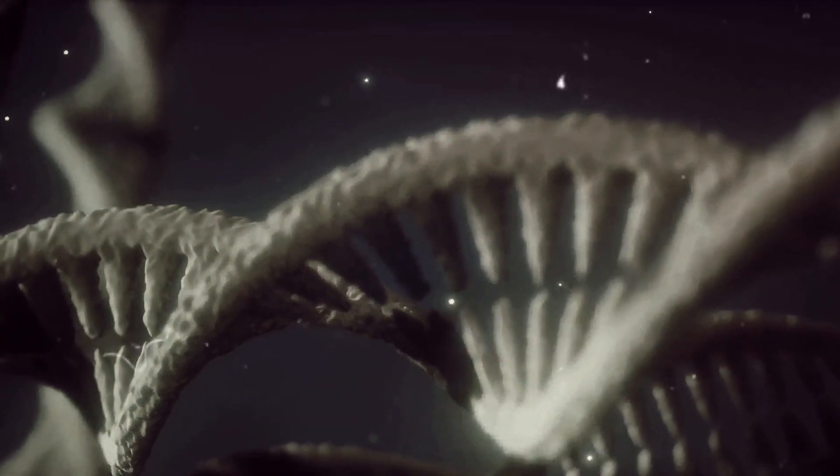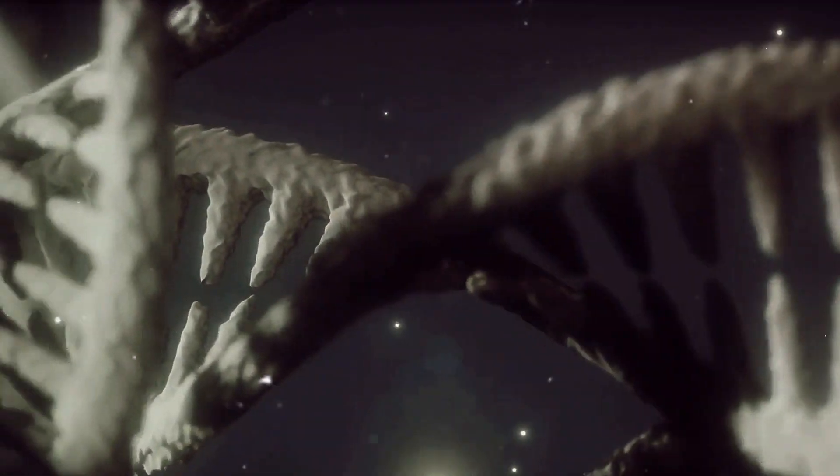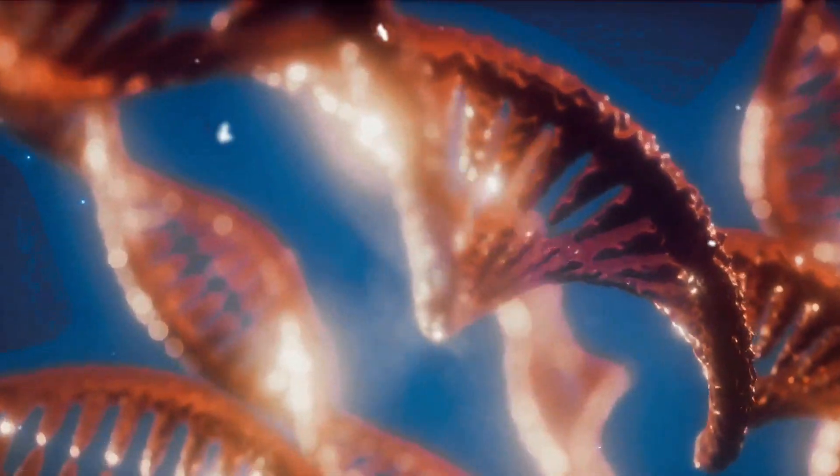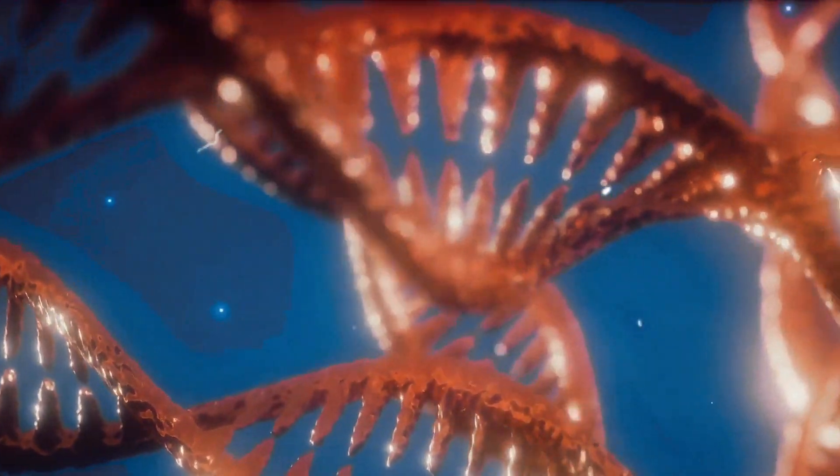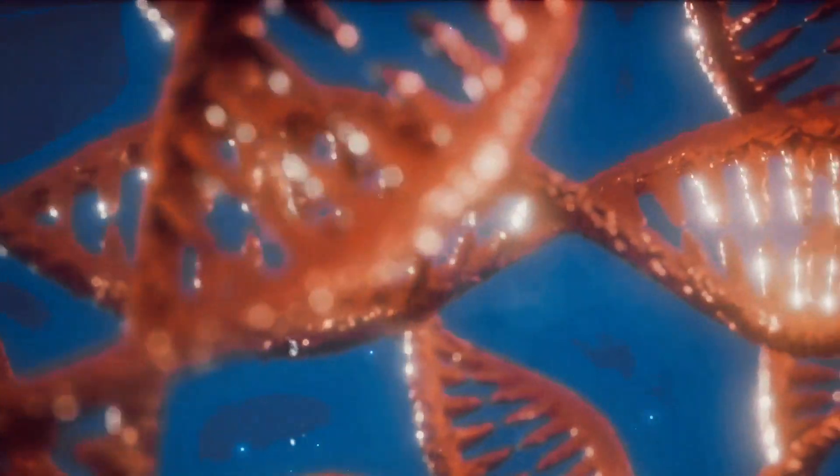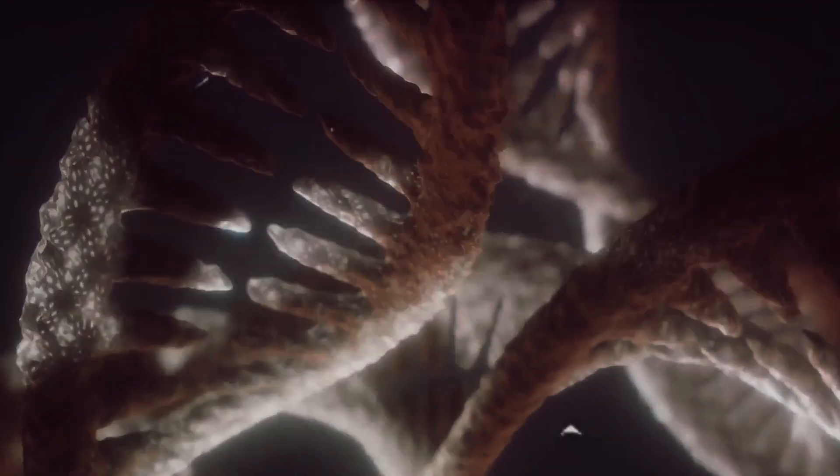Commonly known as A, G, C, and T. The order of these bases is what determines the information available for building and maintaining an organism, similar to how letters of the alphabet form words and sentences. Our DNA resides in structures called chromosomes, found in the nucleus of our cells. Humans typically have 46 chromosomes, 23 from each parent.